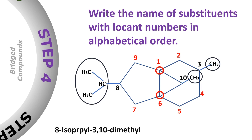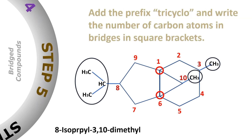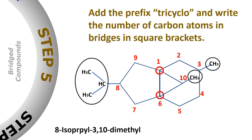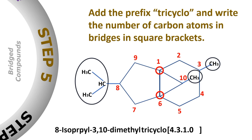We have an isopropyl group at carbon 8 and two methyl groups at carbon numbers 3 and 10. After that, we will write the number of carbon atoms in each bridge in descending order in a square bracket. Since this cyclic system has three rings, we will add 'tricyclo' as a prefix. The right bridge has four carbon atoms so we write four, the bridge on the left side has three carbon atoms so we write three.